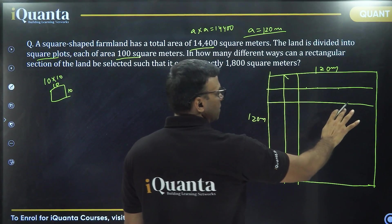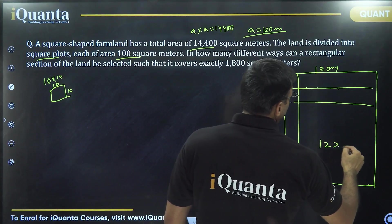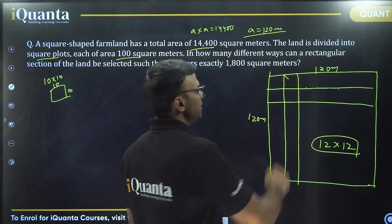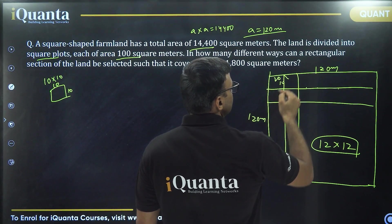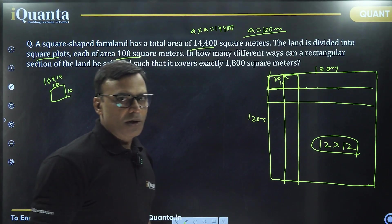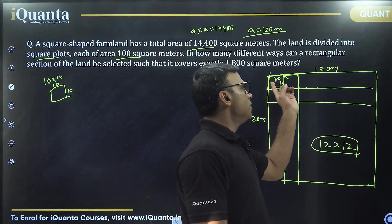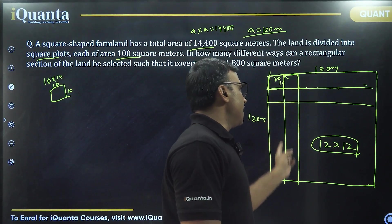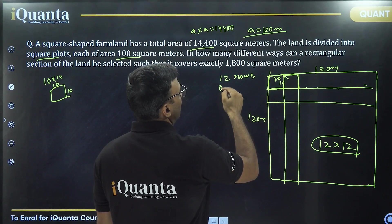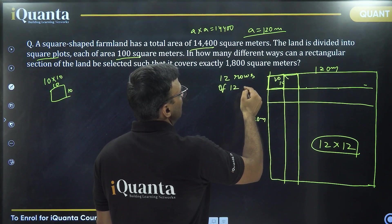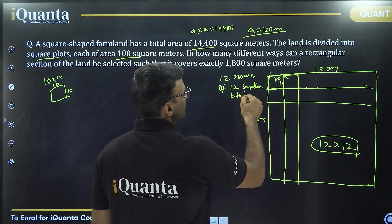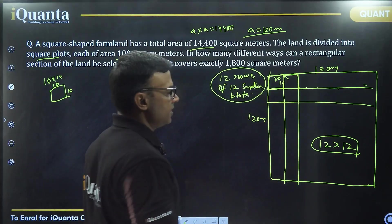Like a chessboard, this will be a chessboard of 12 by 12. So 10 meter slots, this square plot is 10 by 10, 100 square meters. Like this, there will be 12 square plots here and there will be 12 rows. 12 rows of 12 smaller plots are there in this. That's the simple thing.